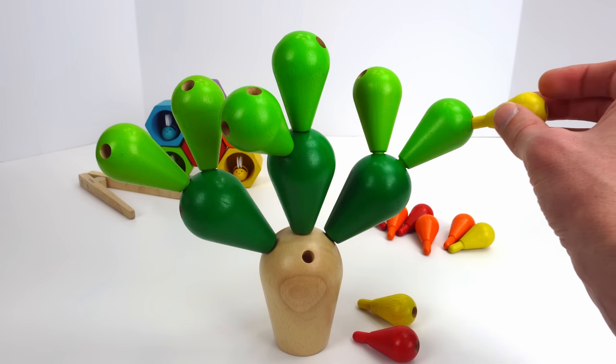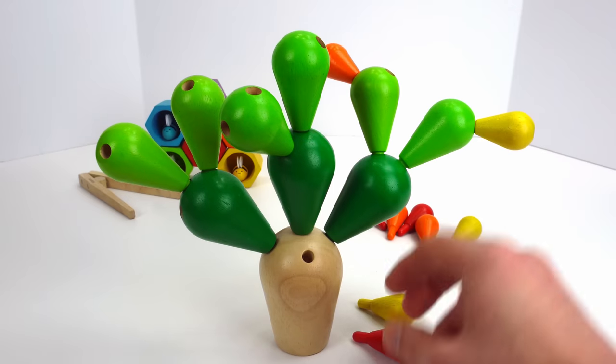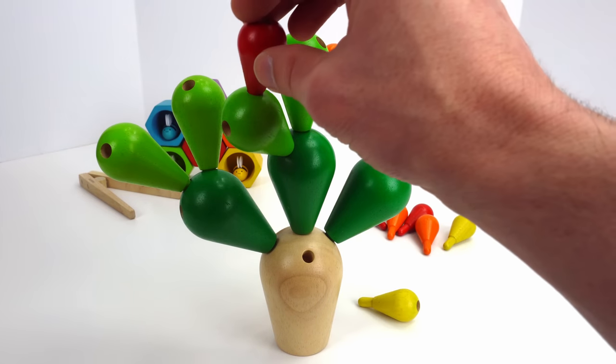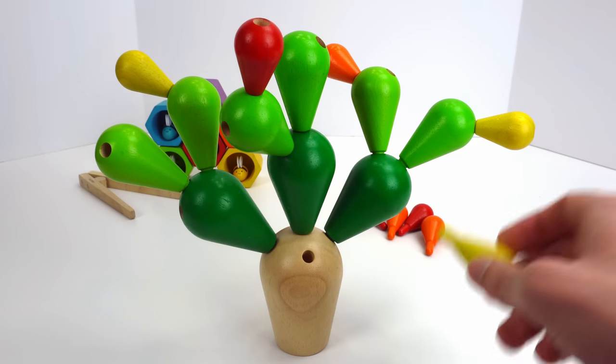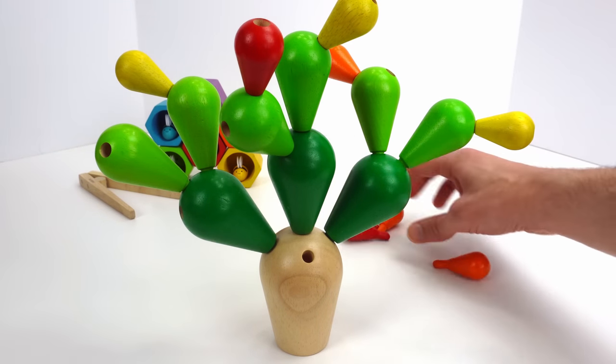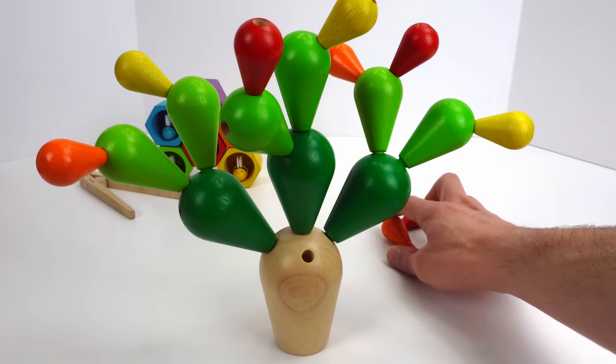Now let's add the yellow, orange, and red ones. These are the flowers of the cactus. The bees can get nectar from the flowers. Alright, two more and we'll have our cactus.